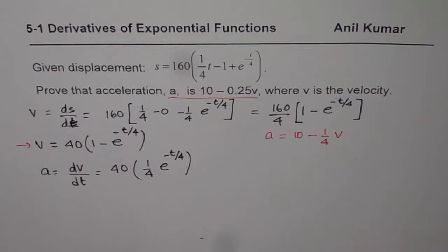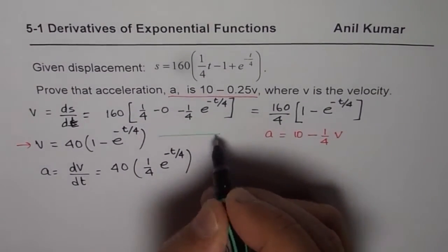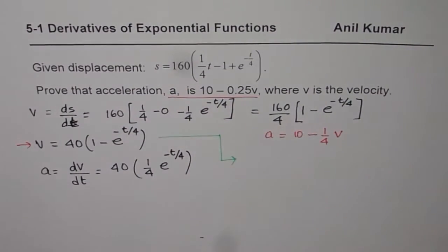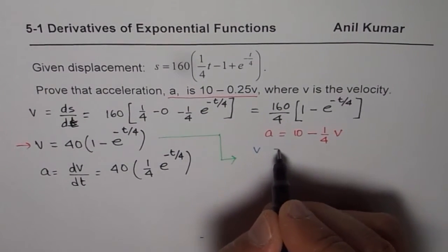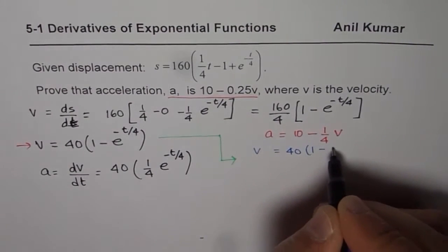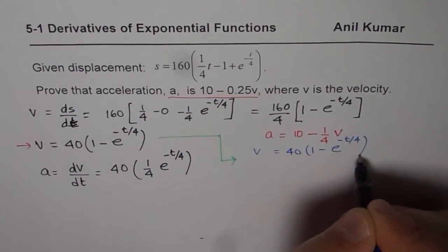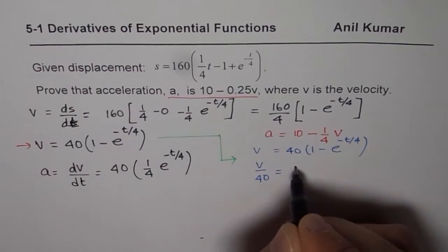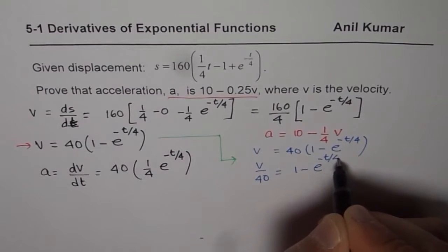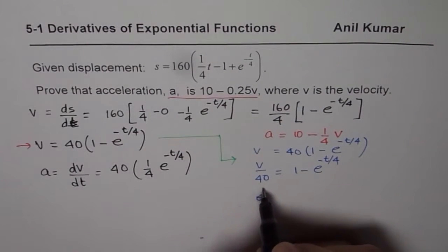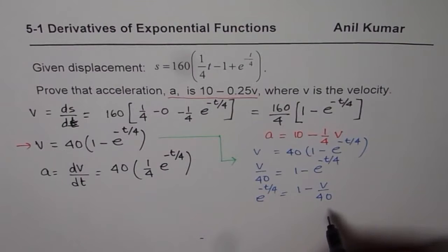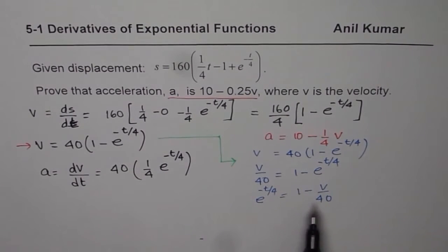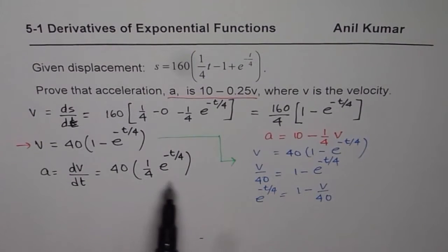Let us look back at the velocity function and rearrange it to find e to the power of minus t over 4. From v equals 40 times (1 minus e to the power of minus t over 4), we get v divided by 40 equals 1 minus e to the power of minus t over 4, so e to the power of minus t over 4 equals 1 minus v over 40.